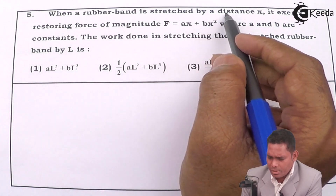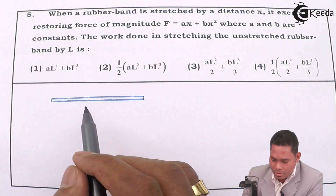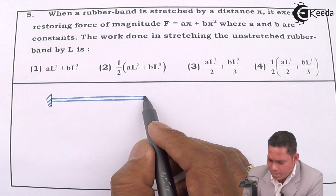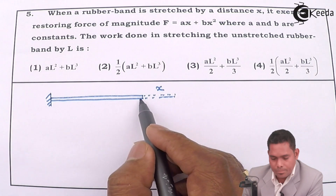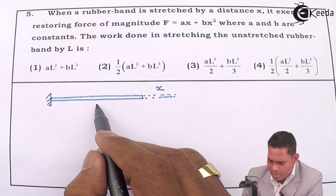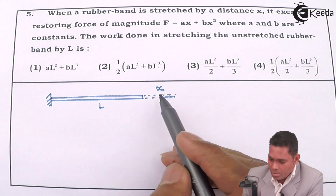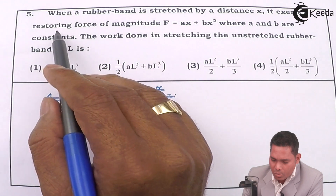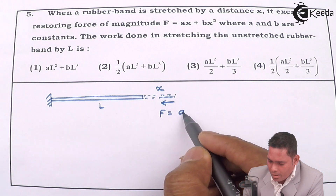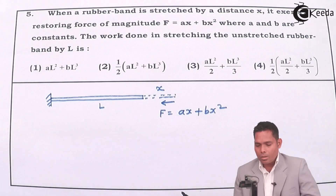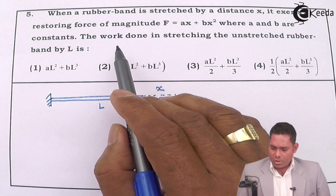When a rubber band is stressed, there is a rubber band over here. This is stretched by a distance x. So this is the natural length — I'll call this L. It's the natural length, and this is stressed by a distance x; this is the elongation produced, that is the delta L. It exists as a restoring force of magnitude ax plus bx squared. This is a quadratic equation, where a and b are positive constants.